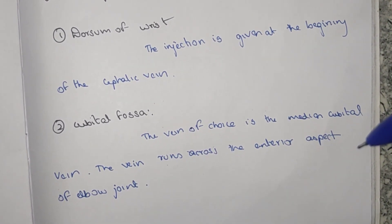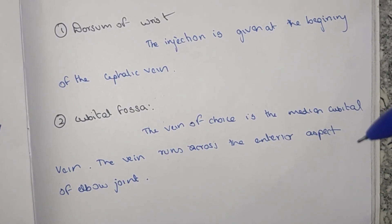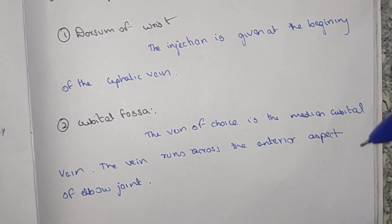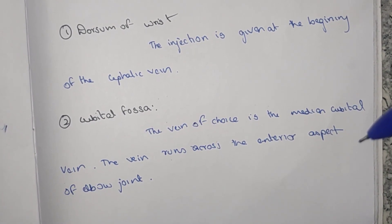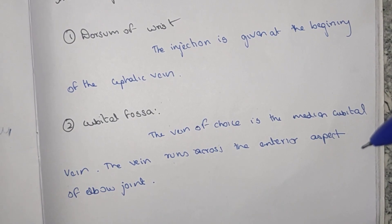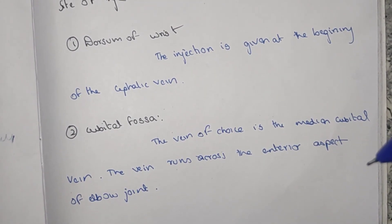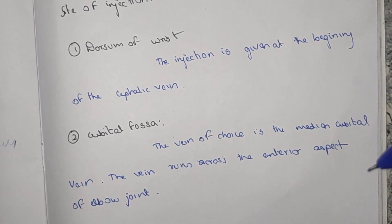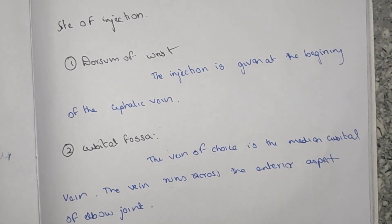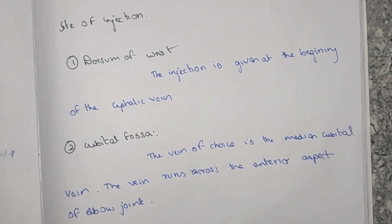At the cubital fossa, the vein of choice is the median cubital vein, which runs across the anterior aspect of the elbow joint. This is the main vein of choice for the intravenous injection. I will show an image of the cubital fossa and the median cubital vein injection.